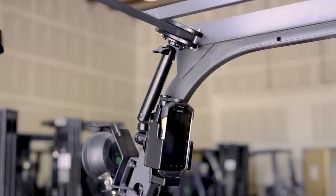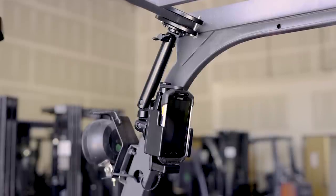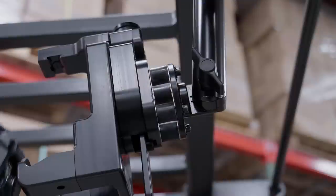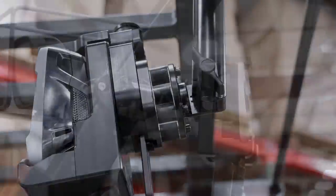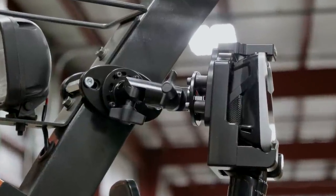The modular design lets you easily incorporate extensions and accessories for a custom solution. For high-shock environments, the vibration damper module can be mounted between the forklift mount and the cradle.